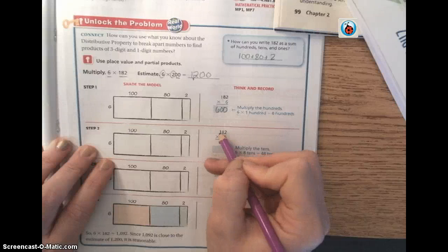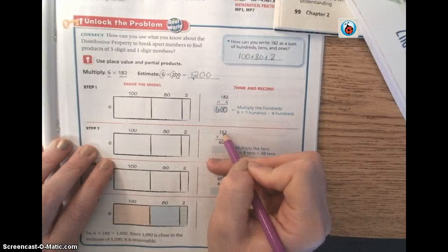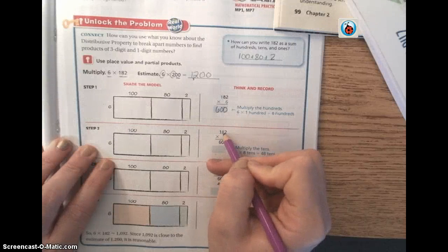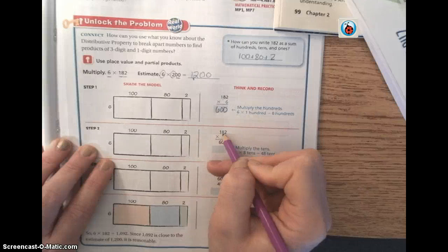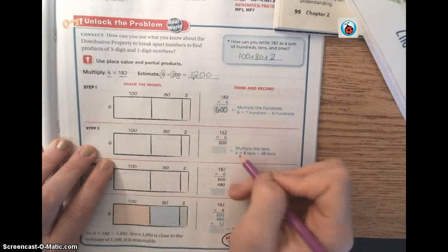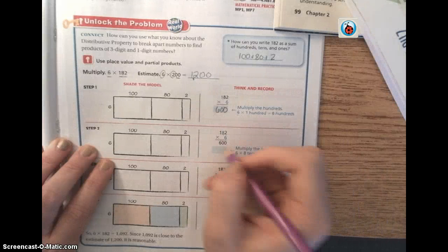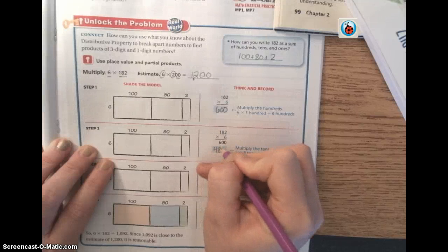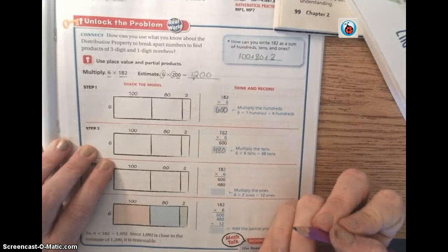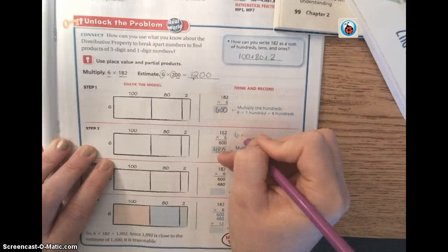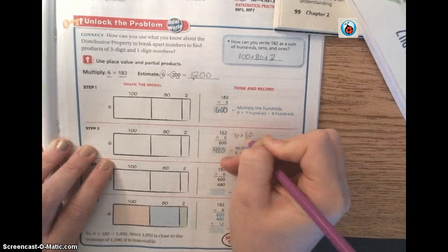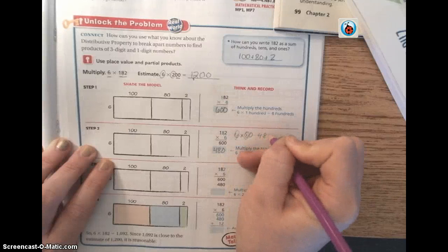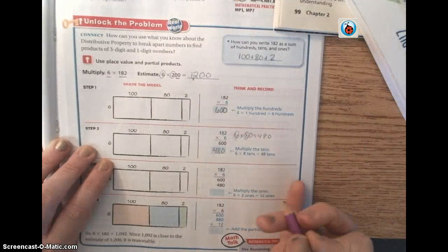Then you're going to just work backwards. So now you're going to go 6 times 8. But it's not 8, it's in the tens place, so it's actually 80. So 6 times 8 tens is 48 tens, or 480. So you could write it like that. 6 times 80. So you do 6 times 8 is 48 plus the 1 zero.